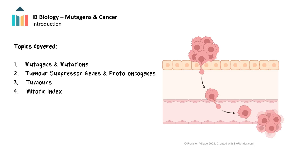In this video, the key concepts that we will examine are mutagens and mutations, how mutations in tumour suppressor genes and proto-oncogenes are linked to cancer, the difference between benign and malignant tumours, and finally, how we can calculate the mitotic index of a sample to better evaluate and differentiate between tumour types. The exploration in this video will offer insights into the origins of cancer and potential therapeutic approaches.